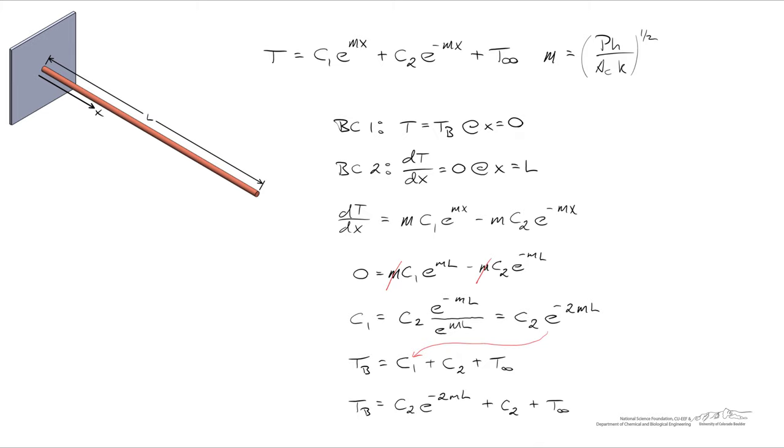So now we're going to plug our expression for C1 into this equation, and then we're going to rearrange and solve for C2, which is a temperature difference divided by 1 plus e to the negative 2mL. So after cleaning things up a little bit,